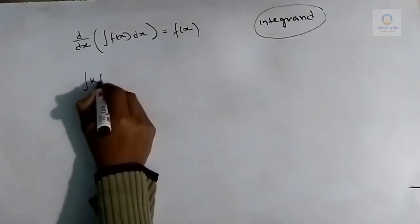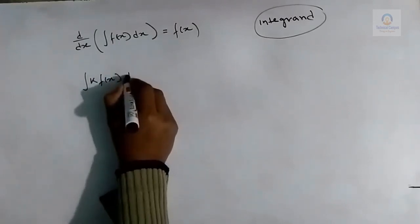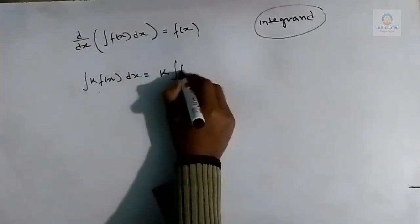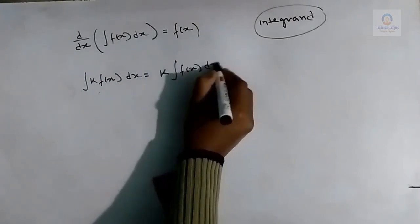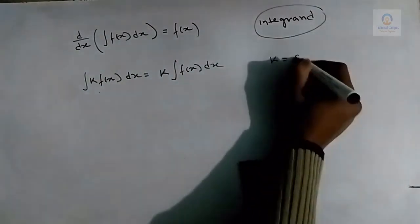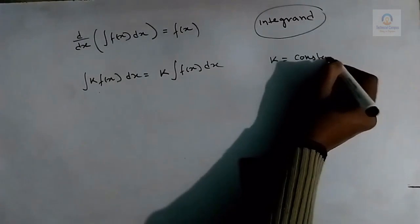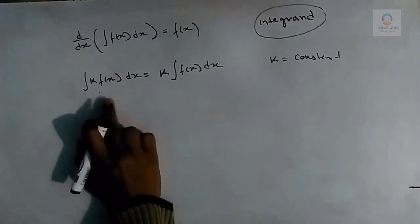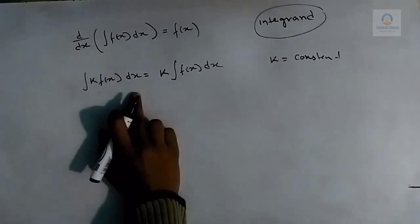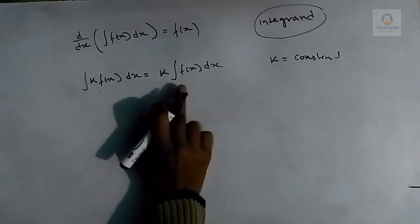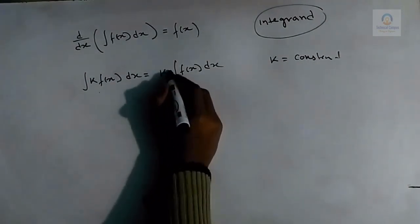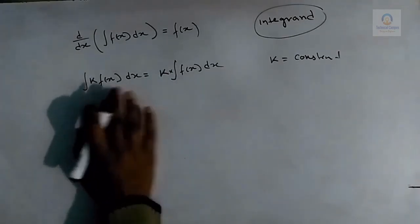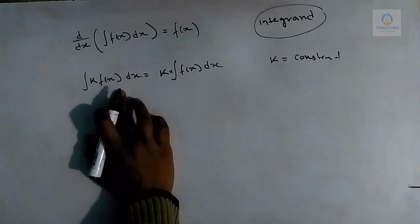The second property: the integral of k·f(x) dx equals k times the integral of f(x) dx, where k is a constant. So the integral of the product of a constant and a function is equal to the constant multiplied by the integral of that function.